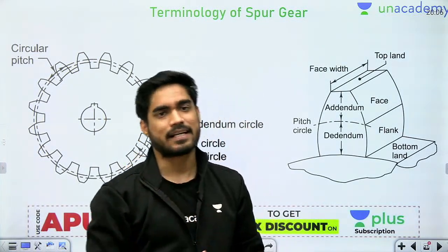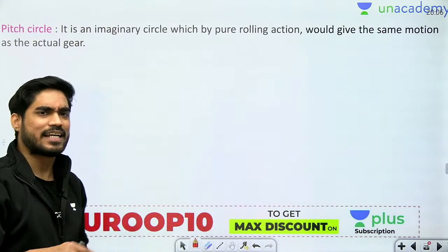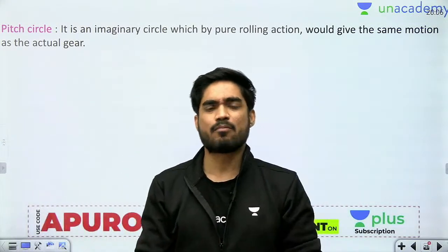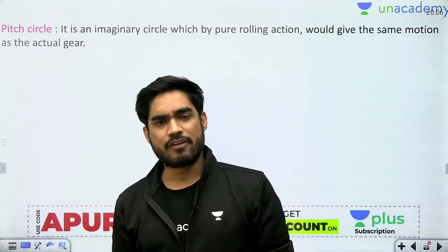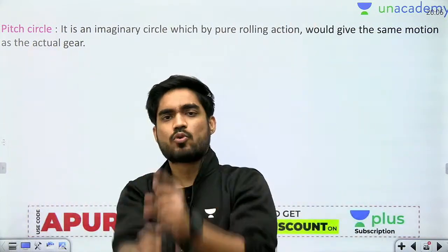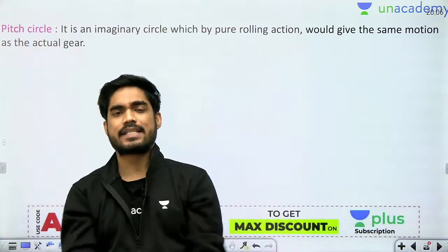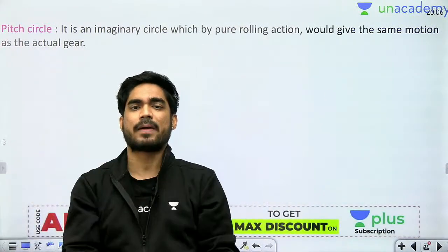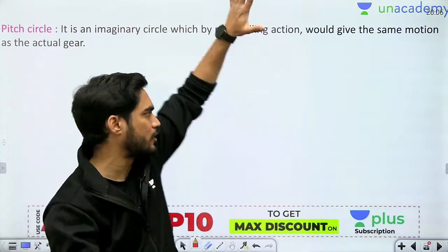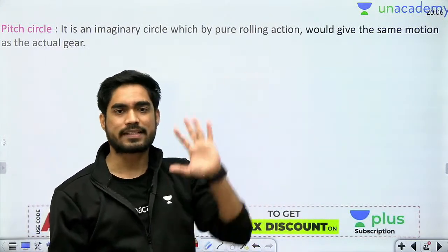The most important circle for us in Machine Design is the pitch circle. The pitch circle is between the addendum and dedendum circles — it is an imaginary circle. When we study the motion of gear, we assume the gears are like two cylinders rolling over each other without slipping. When shown on a 2D plane, these cylinders look like circles. The pitch circle is the kinematic diagram of gear — just as we represent solid bodies with links in kinematic diagrams, the pitch circle represents the gear.